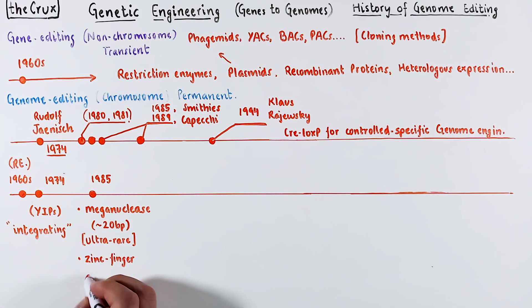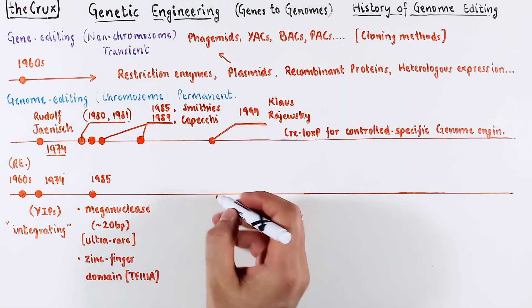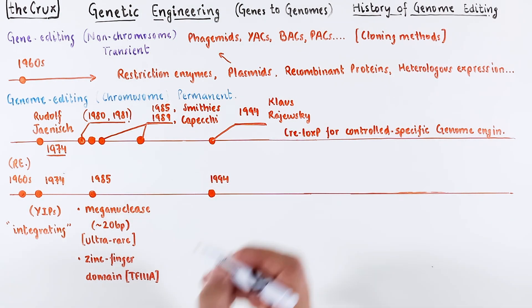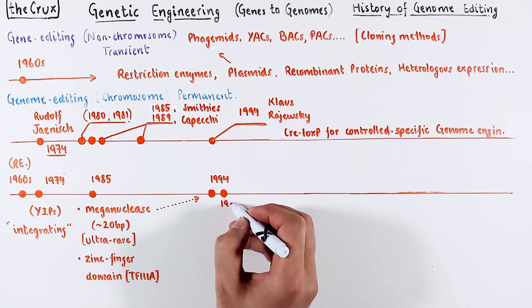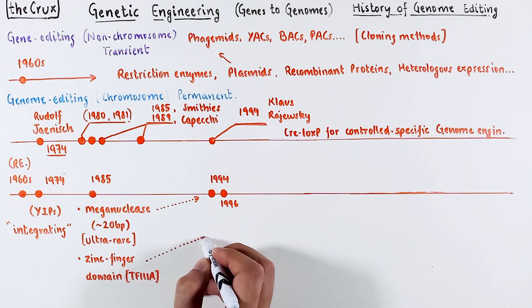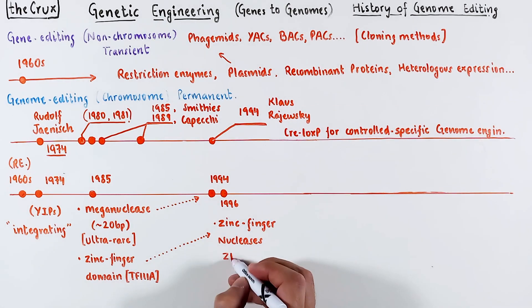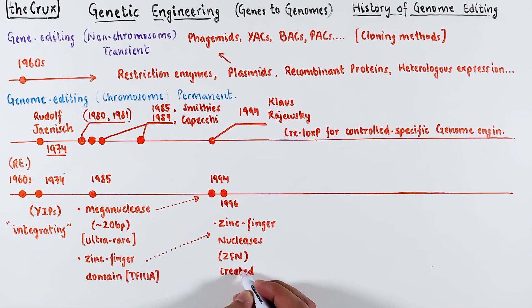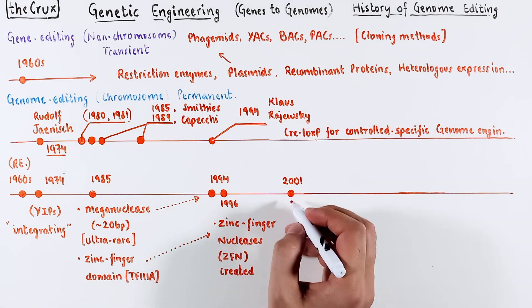In 1985, the discovery of zinc finger domains became a significant leap for this timeline as well. Years of development go by, and in 1994, meganucleases were shown to be useful for genome editing. In 1996, researchers saw the potential of zinc fingers and fused them with nucleases to create chimeric nucleases with the hopes of using them in genome engineering. Four or five years later, the use of ZFNs was eventually recognized.